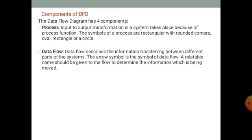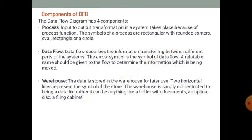Data Flow describes information transferring between different parts of the system. An arrow symbol is used for data flow. The information that is being transferred or moved is given a related name to indicate its flow. Data flow represents the information that is moving, and that flow of information being transferred will be in a single direction.